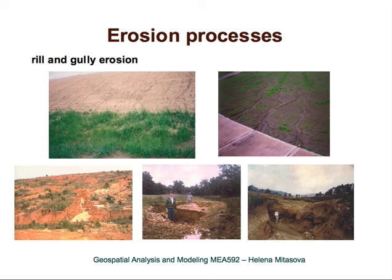Here are small examples of the most common erosion processes caused by flowing water. This is real erosion on a cut slope, and this is real erosion on a lawn. And here are some huge gullies.